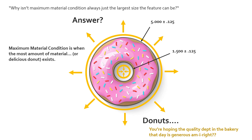To maximize and reach the maximum material condition: for outside diameters like the exterior of the donut, we grow to get more donut; for internal features, we shrink. So for a dimension of 5 ± 1/8 inch, our MMC value is the largest diameter allowed — 5.125 inches.